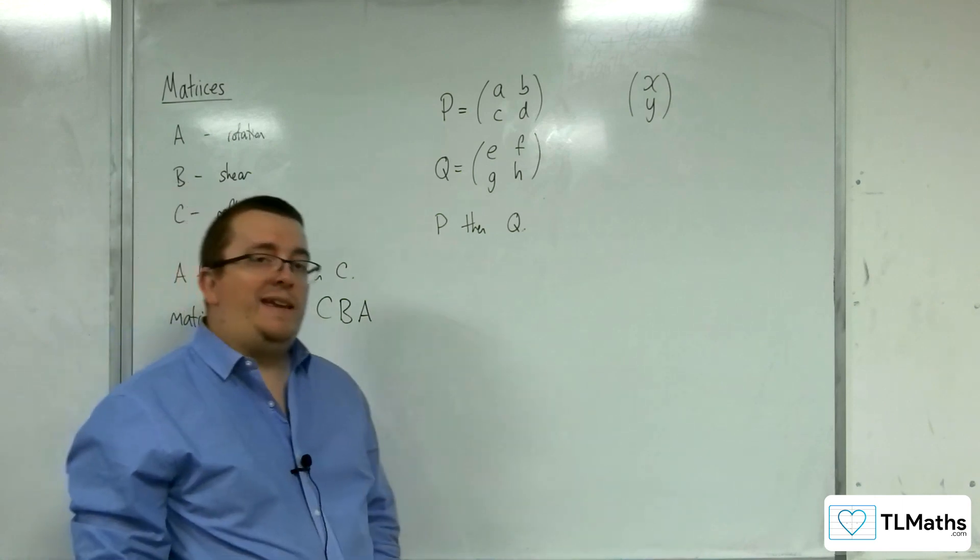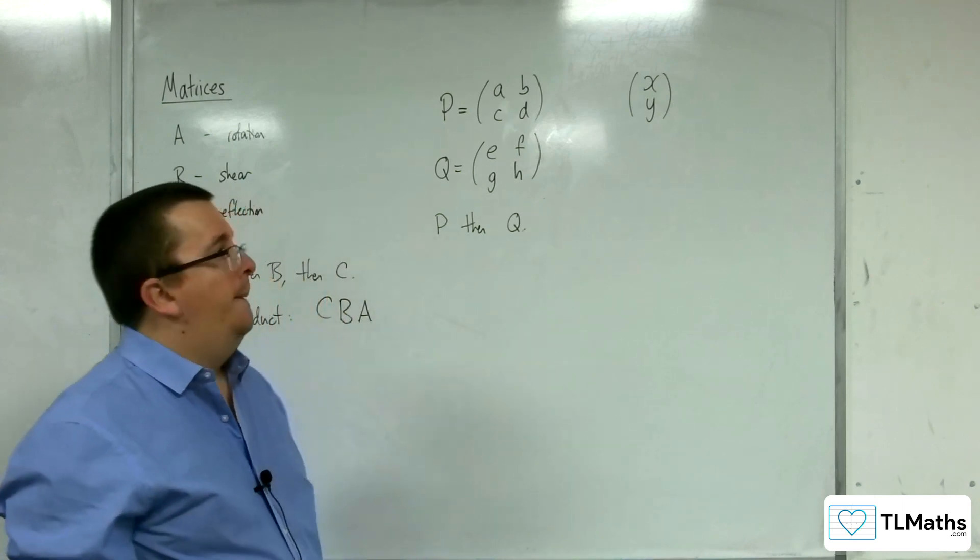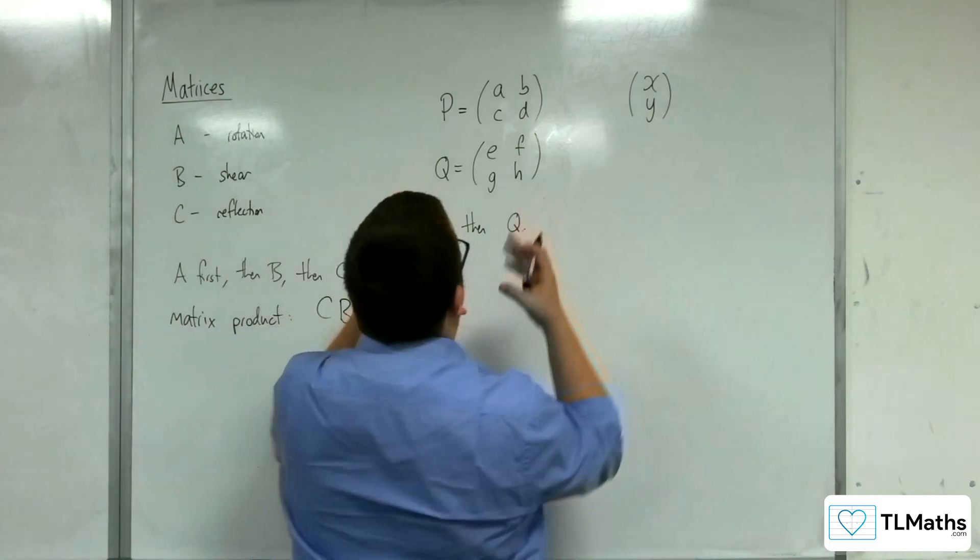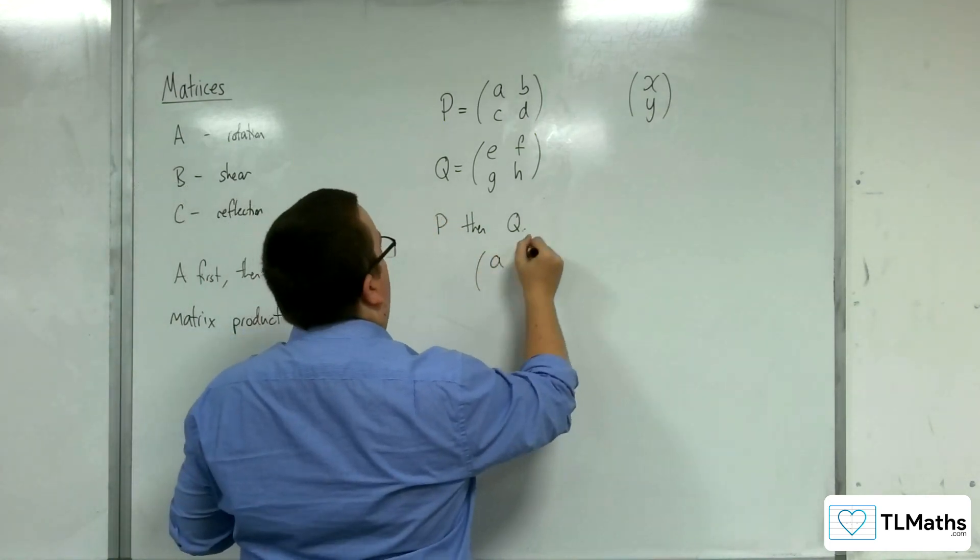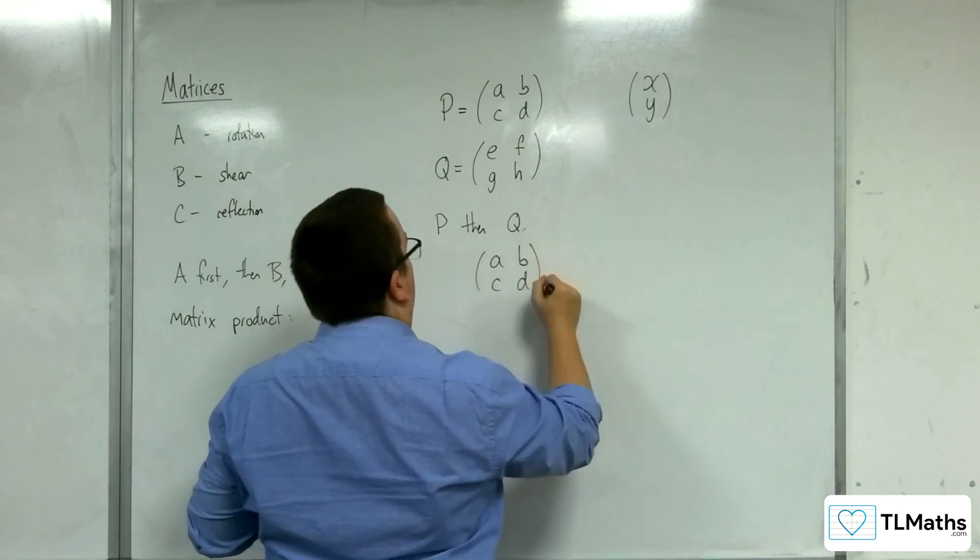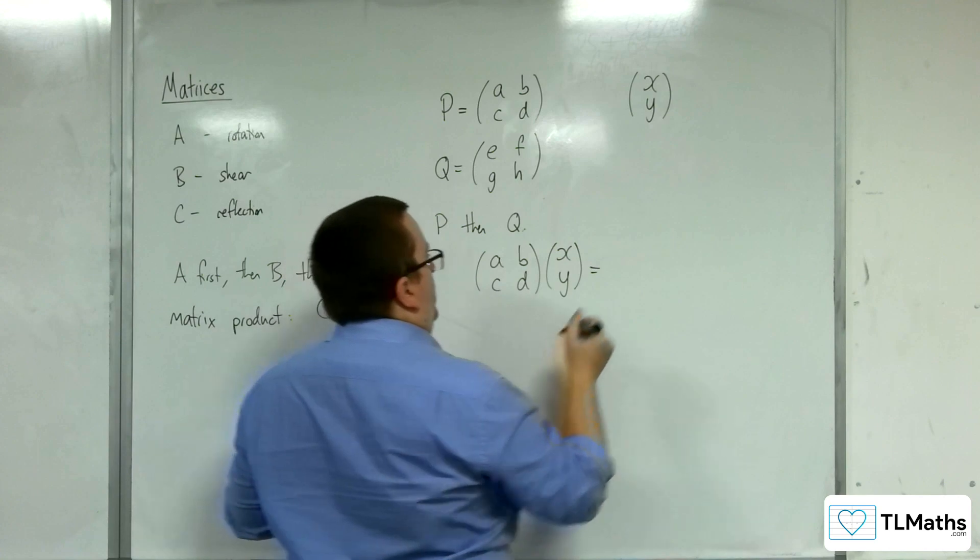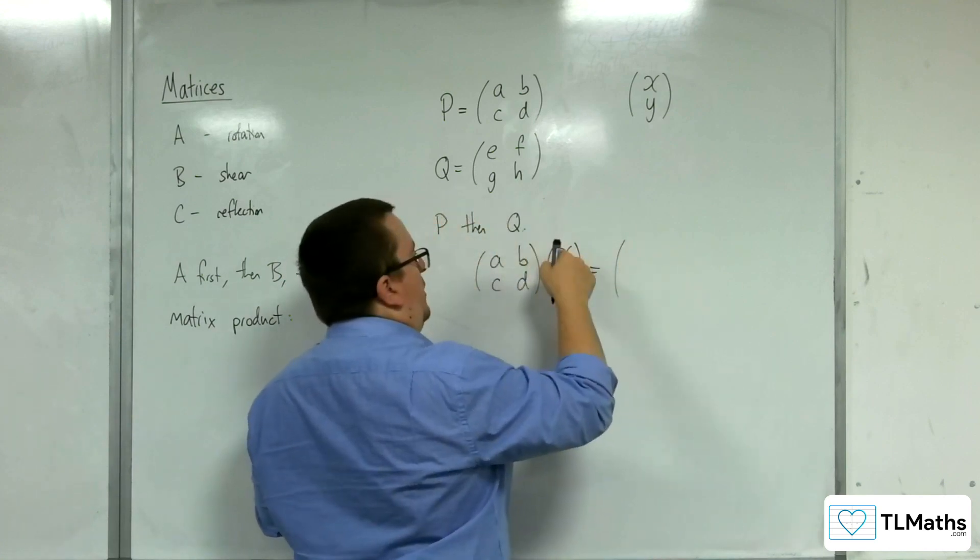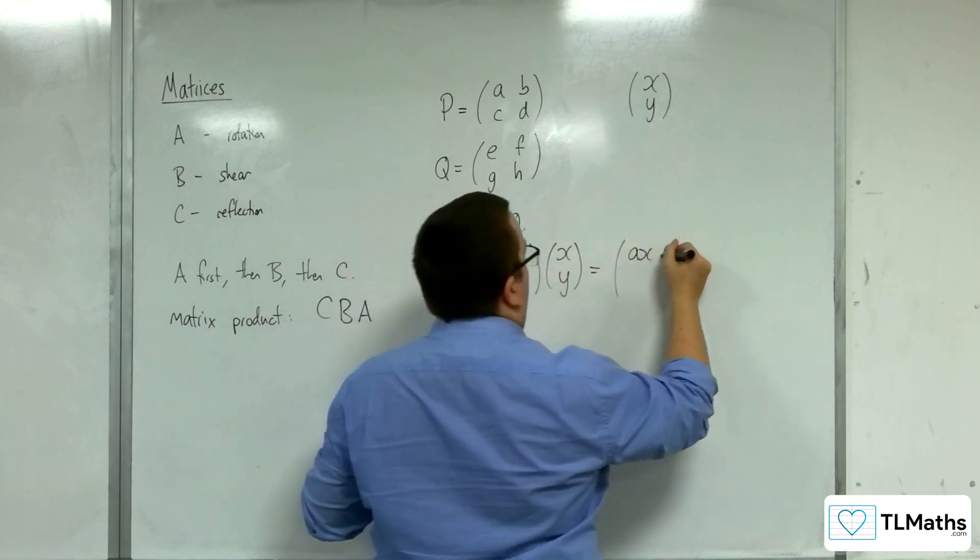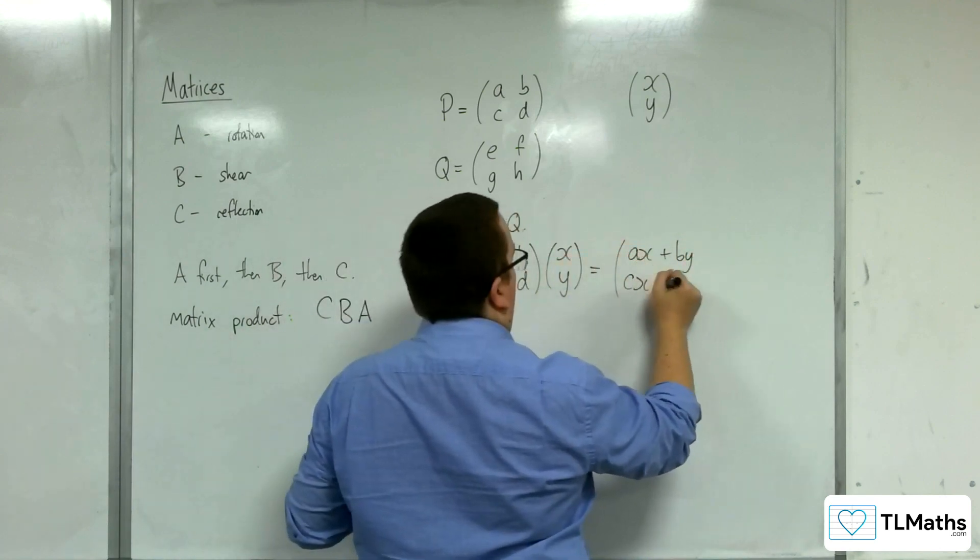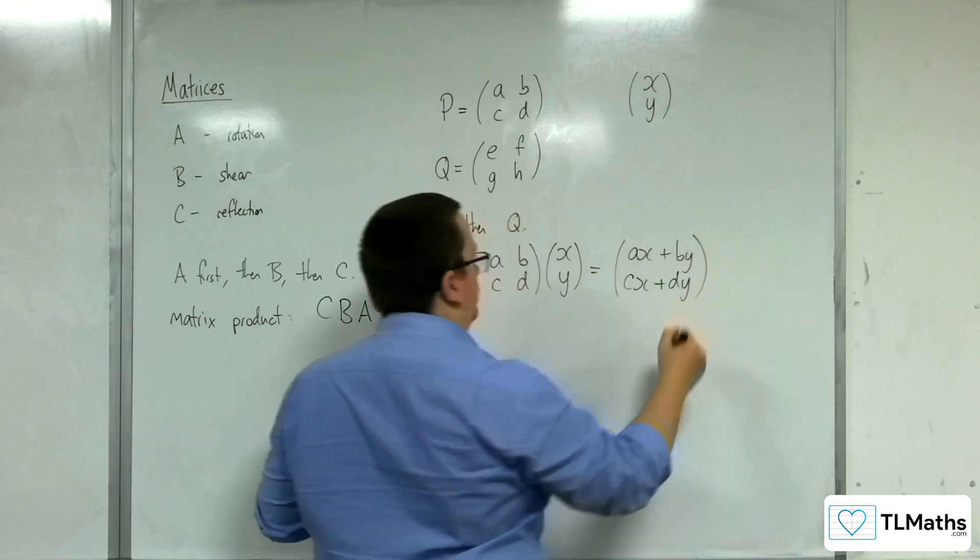We're going to see if we get the same result. So if I'm going to do P, then Q, I'm going to do P first, so A, B, C, D, multiplying with the X, Y. So what do I get? I get A times X plus B times Y. And then I've got C times X plus D times Y.